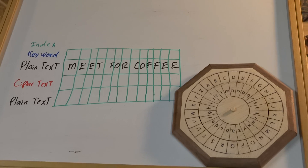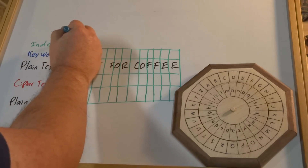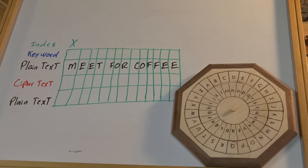So the first thing we want to find is an index. It's not quite the same as the index we were using before — it can be any letter from our inner ring. I'm just going to go ahead and pick X as my index. We won't actually be sending the index or the keyword along to our recipient; they would have to know them already. So it's important that you as the creator and the recipient understand what your index and keywords are.